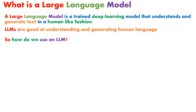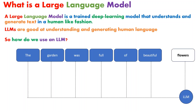How do we use an LLM? Large language models are trained on a massive amount of text data, so LLMs learn about patterns and language from that data. We pass some text as input to the LLM — for example, 'The garden was full of beautiful.' This text is passed as input, and the LLM gives the output text that is likely to follow. Here, the output is 'flowers.' This is how the LLM works.